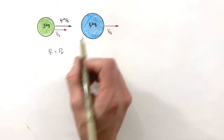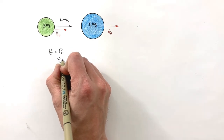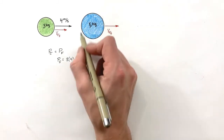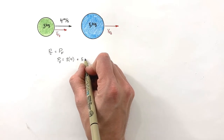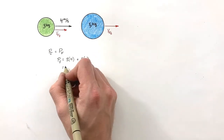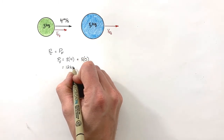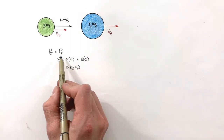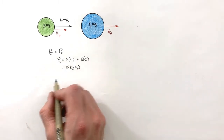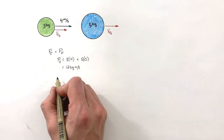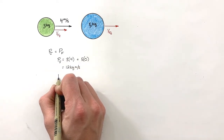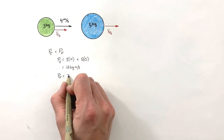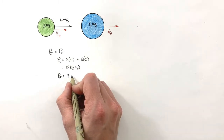Looking at the initial momentum of this system: that is the momentum of the first ball plus the momentum of the second ball. The initial momentum equals the three kilogram ball's momentum — that is 3 × 4 — plus the momentum of the five kilogram ball — that is 5 × 0. This gives us an initial momentum of 12 kilogram meters per second.